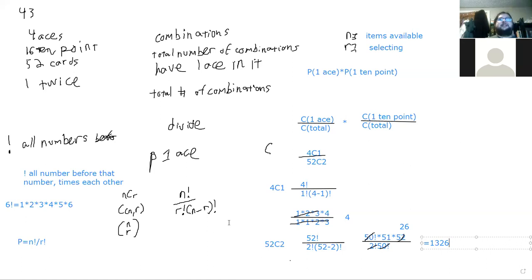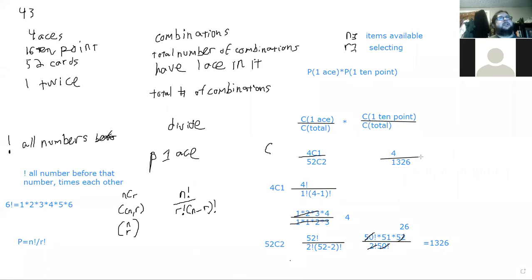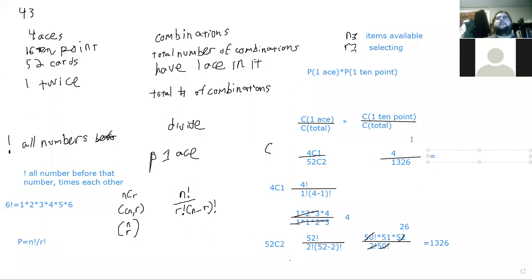So the probability of pulling an ace is 4 over 1326, which is 0.003. So 0.003 — I'm sorry — 0.3 percent of all hands will have an ace in them. That's the chance of pulling an ace.